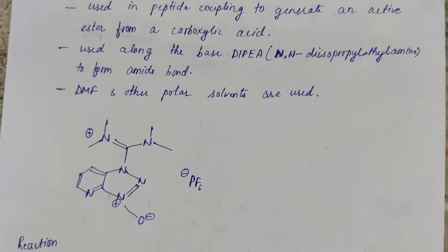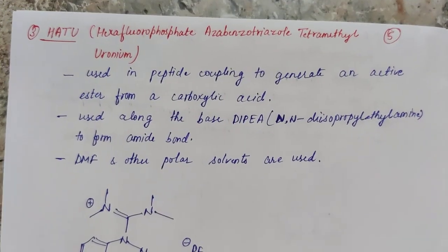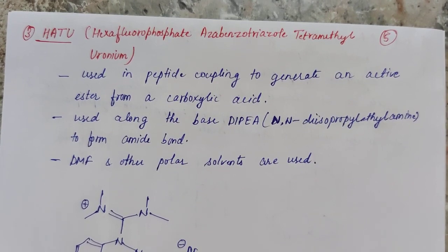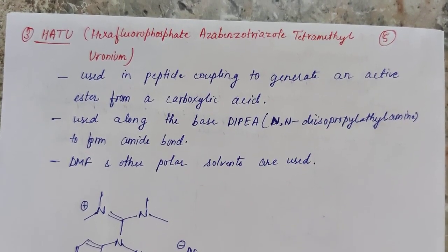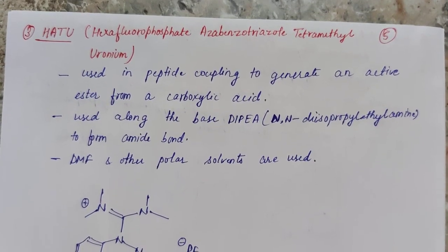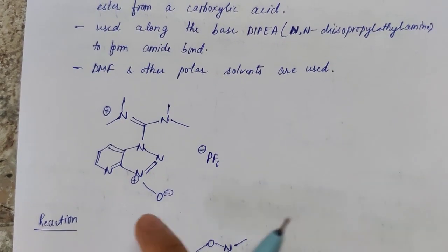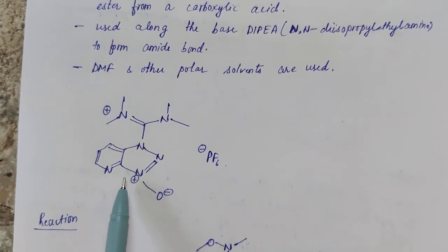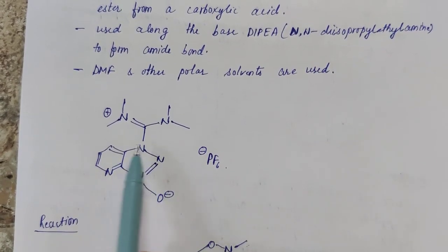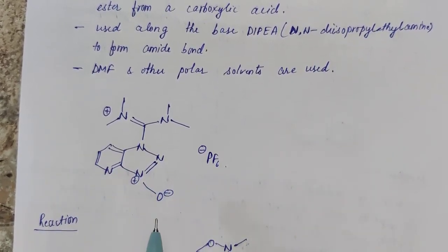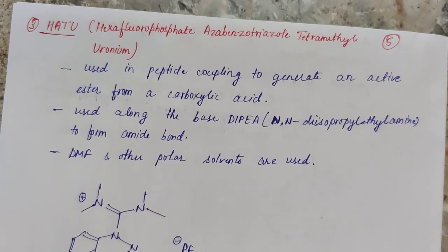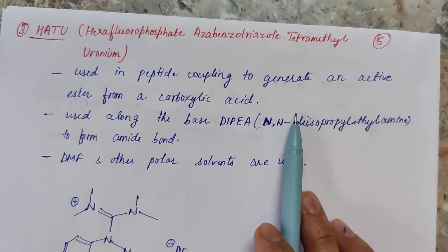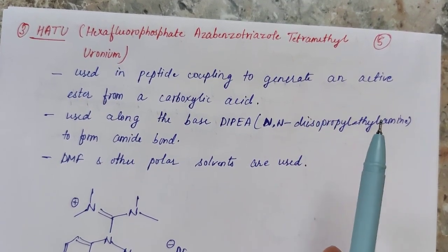The third reagent is HATU, hexafluorophosphate azabenzotriazole tetramethyl uronium. Its structure consists of a hexafluorophosphate anion and a benzotriazole unit with two fused rings and a tetramethyl uronium group. Its use is as a peptide coupling reagent, and its role is specifically to activate the carboxylic acid.